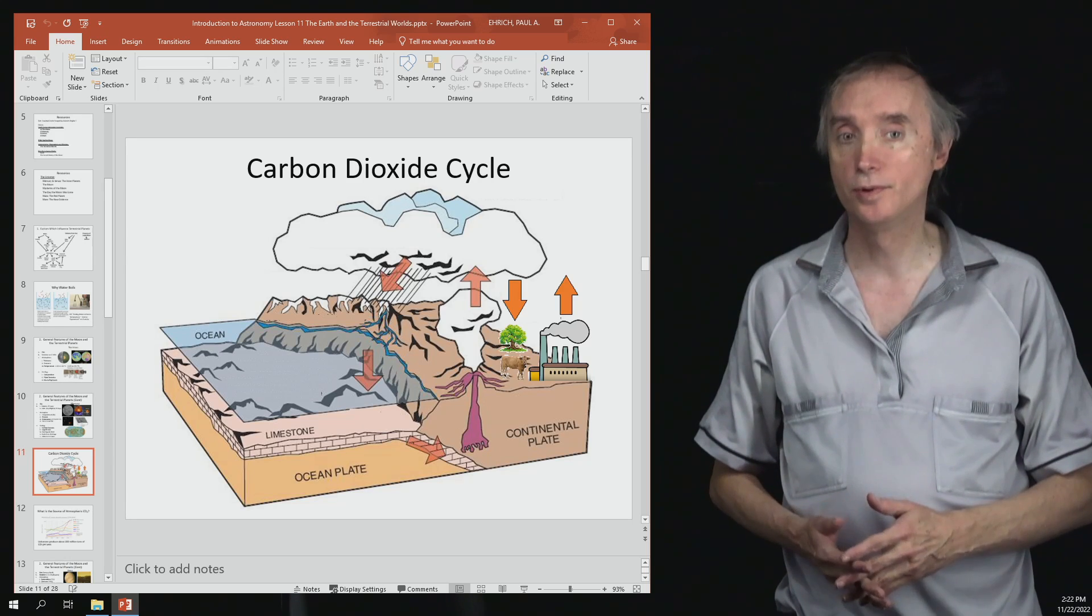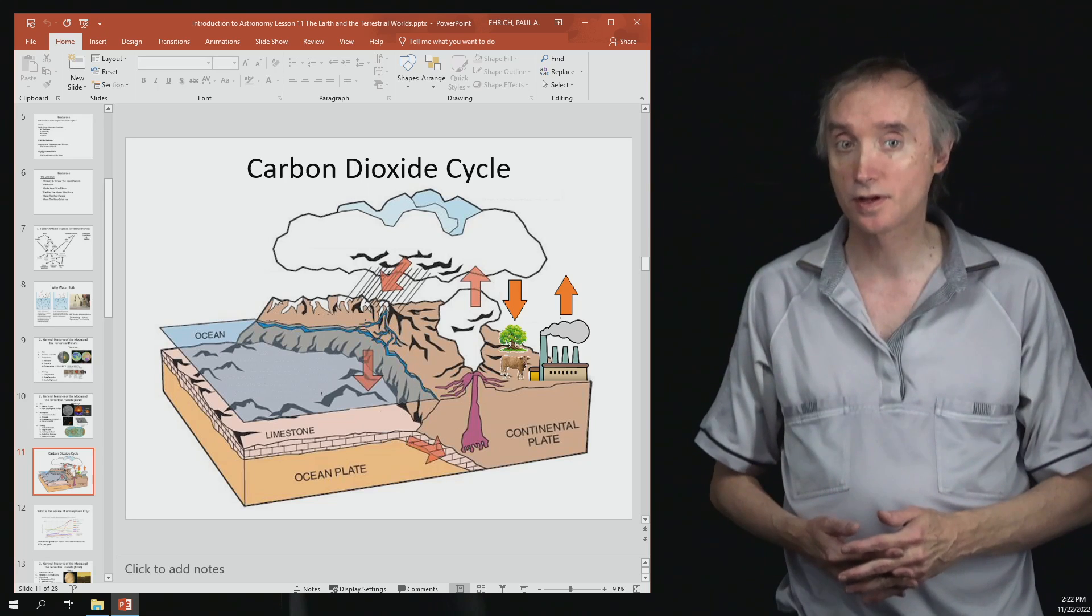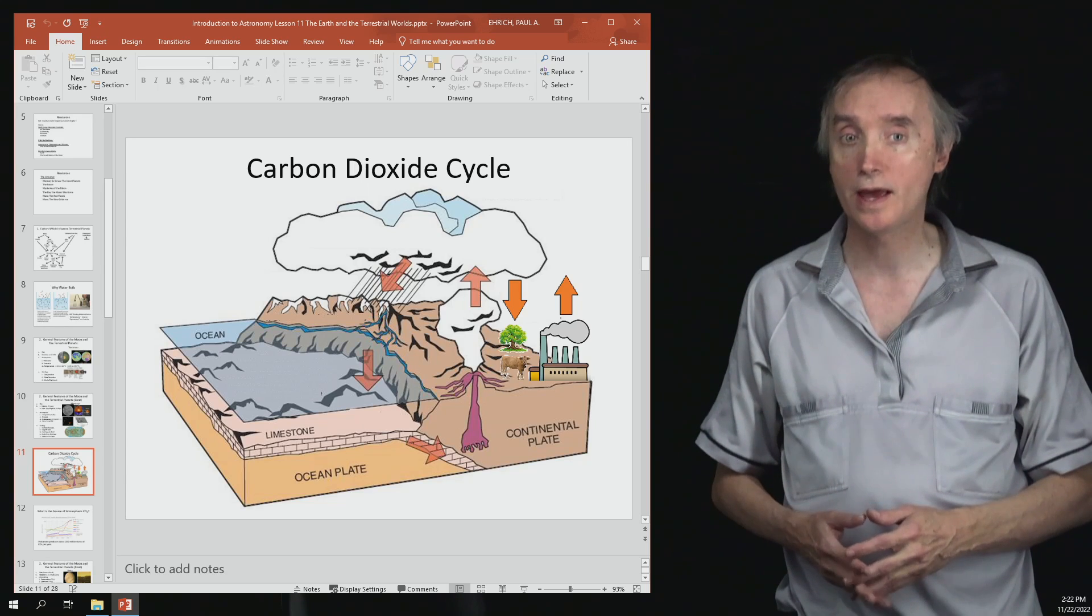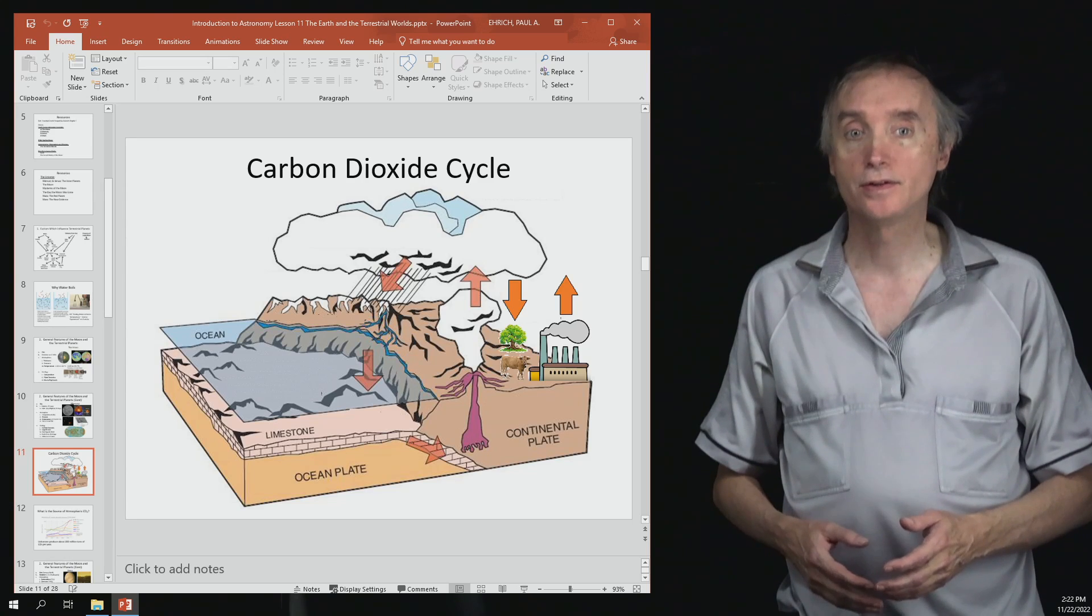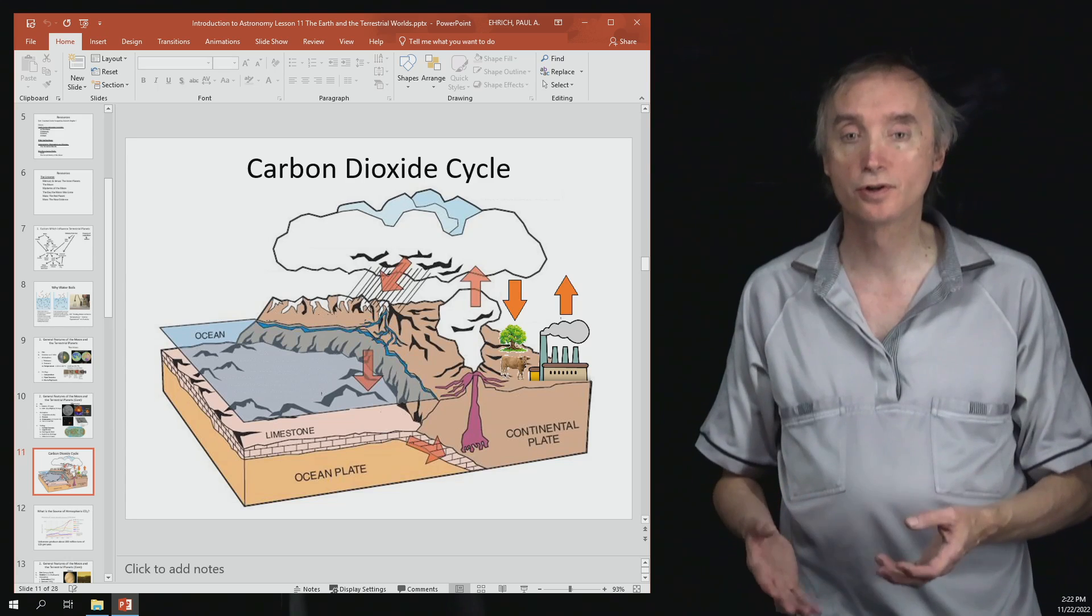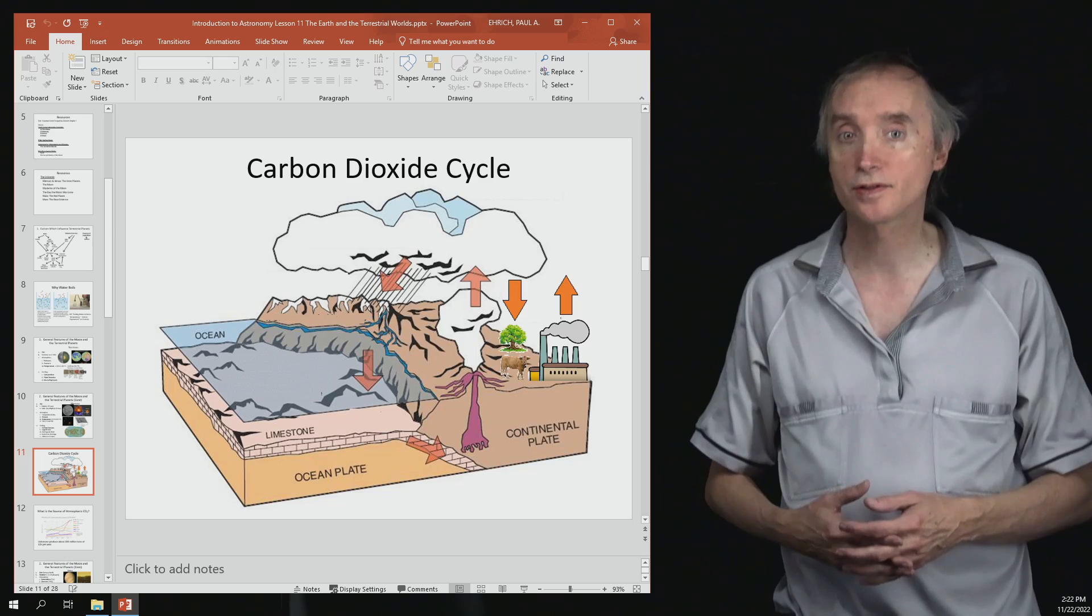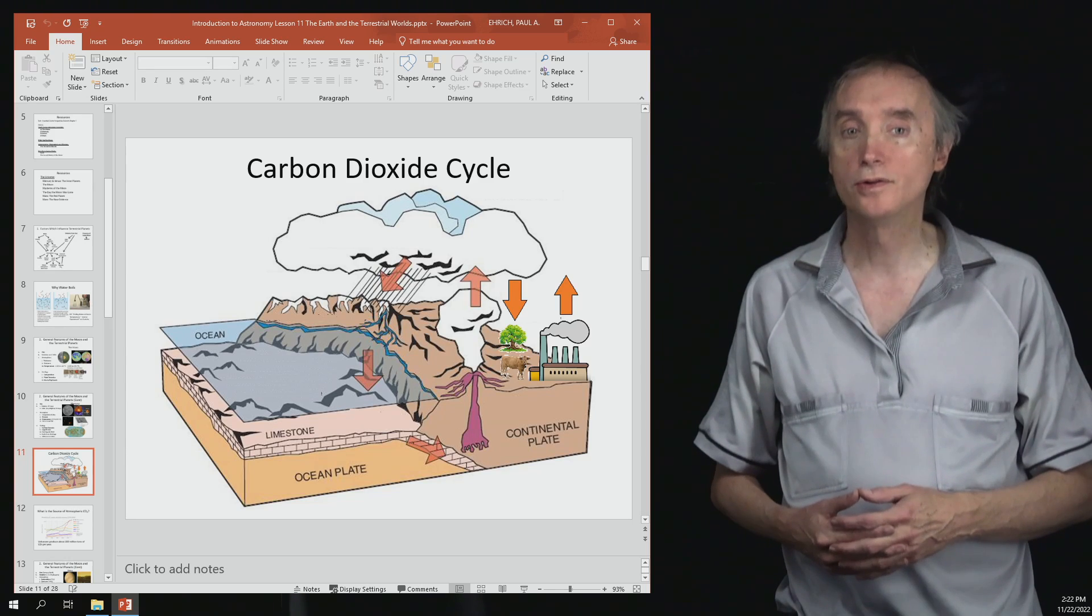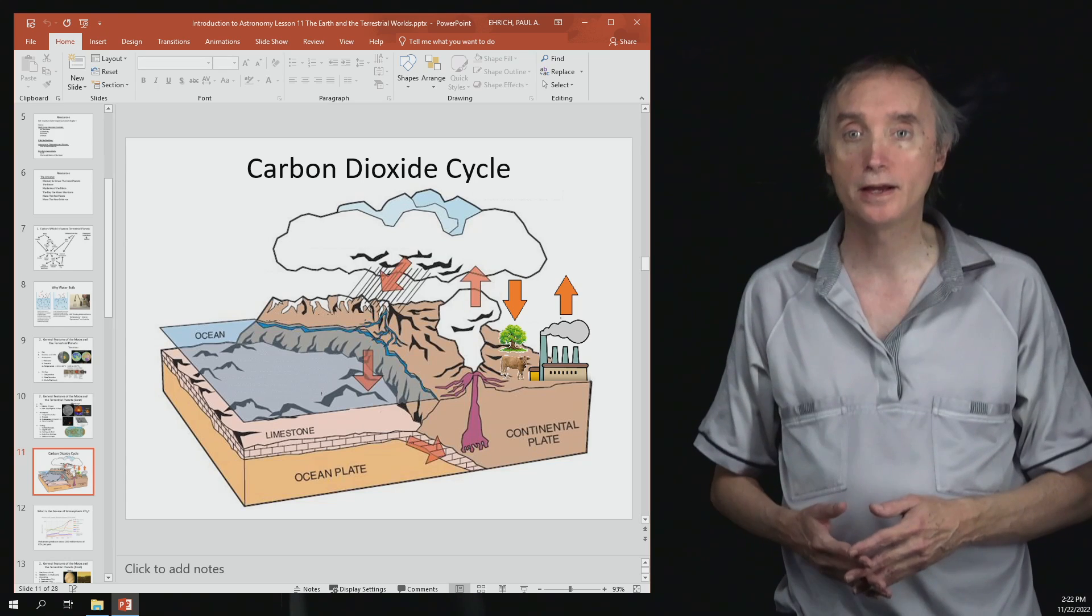Earth is a little bit special in that we have a couple more ways of producing carbon dioxide. One is animals. Any living organism that converts sugars into energy produces carbon dioxide as a byproduct. Also, we have cars and power plants that produce carbon dioxide.